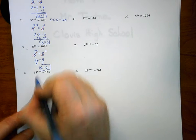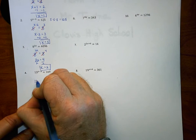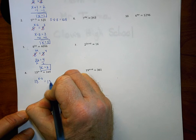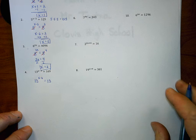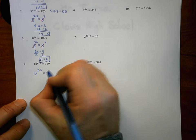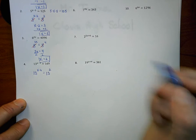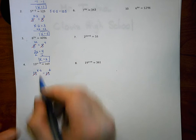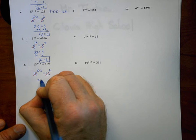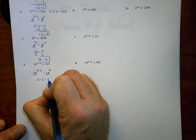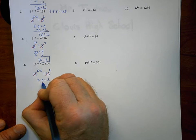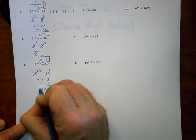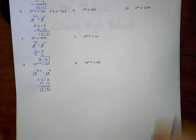Number 4: we leave 13 to the power of x minus 3 as is, and change 169, the larger number, to a power of 13. 13 to the second power is 169. The 13s cancel each other out, and the equation becomes x minus 3 equals 2. Adding 3 to both sides, the solution to number 4 is x equals 5.